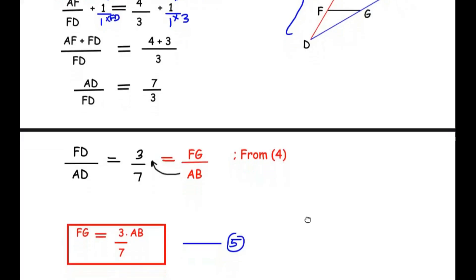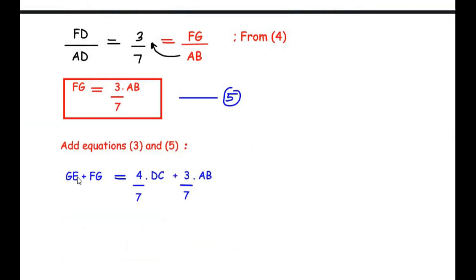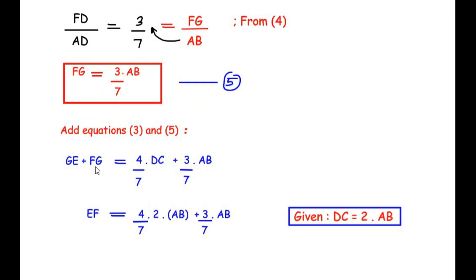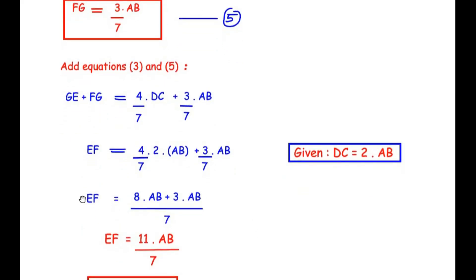From equation 4, FD over AD equals FG over AB equals 3 over 7, so FG equals 3 over 7 times AB. Let this be equation 5. Adding equation 3 and equation 5: GE plus FG equals 4 over 7 times DC plus 3 over 7 times AB. Since GE plus FG equals EF and DC equals 2 times AB, we get EF equals 4 over 7 times 2AB plus 3 over 7 times AB, which simplifies to EF equals 8AB plus 3AB all over 7, giving EF equals 11AB over 7.